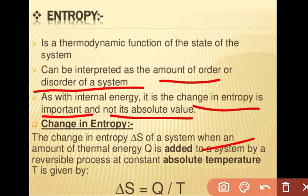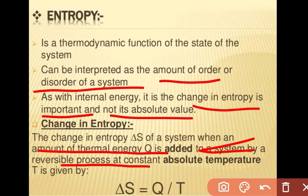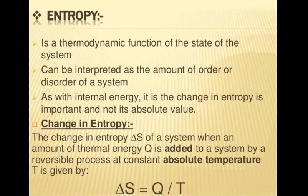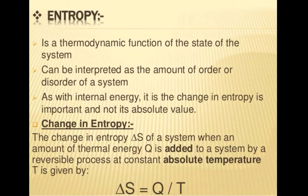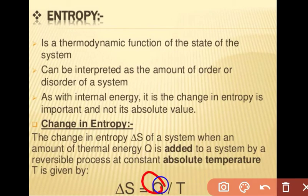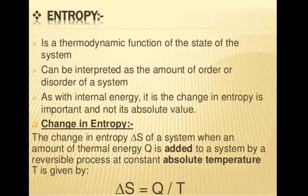When an amount of thermal energy Q is added to a system by a reversible process at constant absolute temperature T, then the change in entropy is given by the relation: ΔS = Q / T. So when heat Q is added to the system at a particular temperature T, the change in entropy is equal to Q upon T.